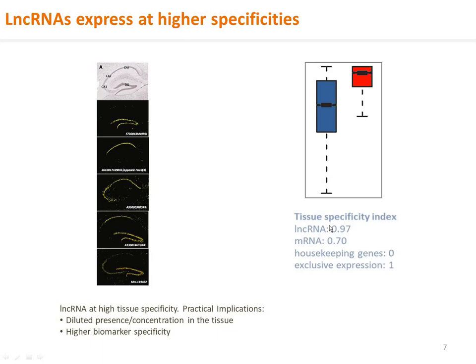Another outstanding property of lncRNAs is that their expression can be highly specific for cell types. For example, individual hippocampal lncRNAs are expressed strictly in particular sub-regions and layers in CA1, CA2, CA3, and dentate gyrus. Even though these lncRNAs can be expressed at high levels in the corresponding cell types, they can become diluted in total RNA extracted from an entire piece of tissue and appear at low amounts per tissue mass.